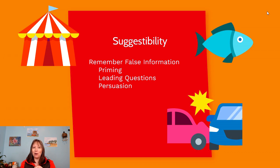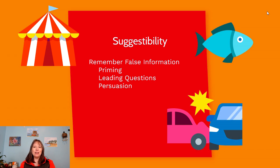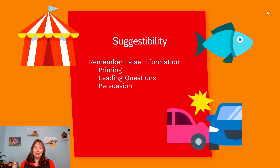Leading questions don't alter how we encoded something but alter how we retrieve it. A popular study by Dr. Loftus had people watch a film of two cars colliding. Afterward, participants were asked how fast the cars were going when they 'dinged,' 'collided,' or 'crashed' into each other. Depending on the verb used, they gave very different speed estimates. Furthermore, those given the word 'crashed' later recalled seeing broken glass on the pavement — even though that never actually happened.